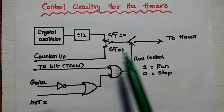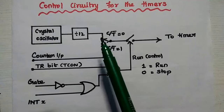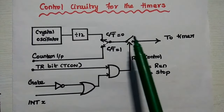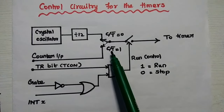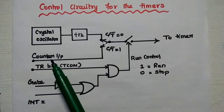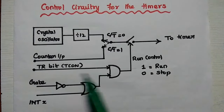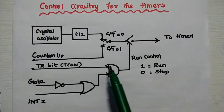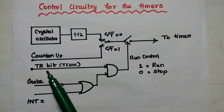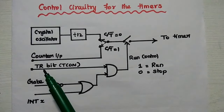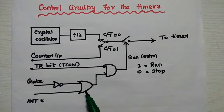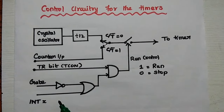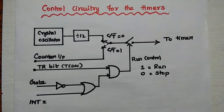This is the control circuitry for the timer. The crystal oscillator is divided by 12 to get the operating frequency for the timer. This connects to C/T̄ = 0 because that bit allows the circuit to act as a timer; if connected to C/T̄ = 1, it acts as a counter. The timer operation is controlled by an AND gate: one input comes from the TR bit in TCON (the timer run control bit), and the other input comes from an OR gate, which takes inputs from the Gate signal and the external hardware interrupt from the TCON register.